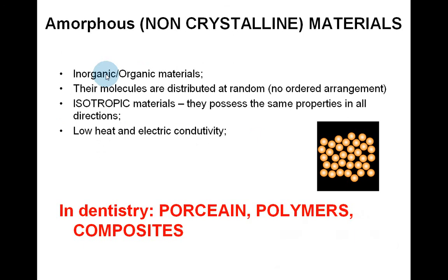Amorphous materials can be inorganic and organic. Their molecules are distributed at random, so there is no ordered arrangement. They are also isotropic materials, possessing the same properties in all directions. They have low heat and electric conductivity. In dentistry, amorphous materials include porcelain, polymers, and composites.